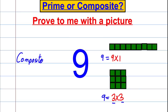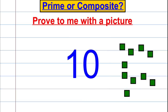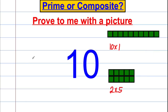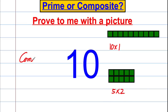Have a go at another one — ten. Ten can be written as ten multiplied by one, but it can also be written as five multiplied by two: five lots of two. So it is a composite number, because there are other numbers other than ten and one — namely five and two — that can multiply together to make ten.